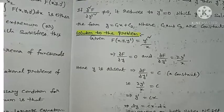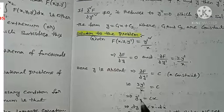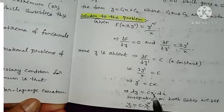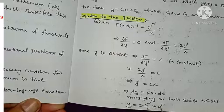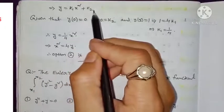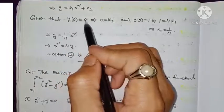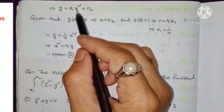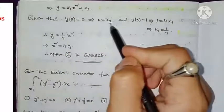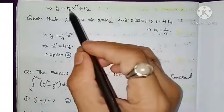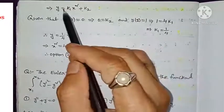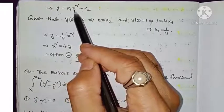Since y-dash = dy/dx = cx, we write dy = cx dx. Integrating both sides, y = c · x²/2 + c-dash, which we write as y = k₁x² + k₂. Applying the initial condition y(0) = 0: substituting x = 0 gives k₂ = 0. Applying y(2) = 1: substituting x = 2 gives 1 = k₁ · 4, so k₁ = 1/4.